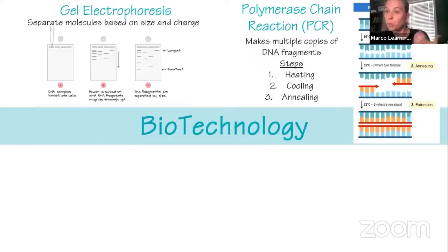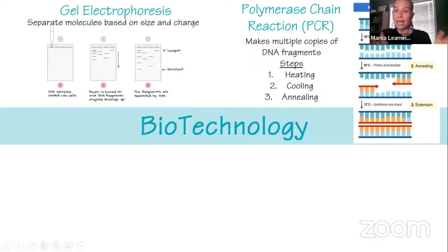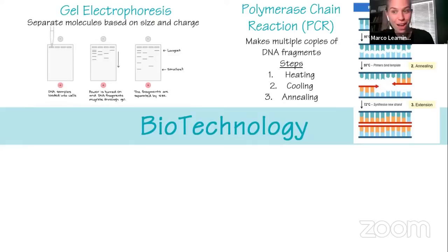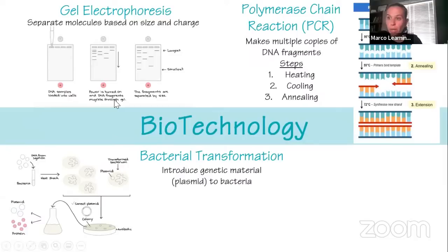Polymerase chain reaction (PCR) amplifies or makes multiple copies of a certain DNA segment. You heat the DNA to denature and separate the strands, cool it down to add a primer, then DNA polymerase builds the second strand. This replication process is repeated multiple times in a thermocycler. A special Taq polymerase from a thermophilic bacterium is used because it remains stable at high temperatures and won't denature.